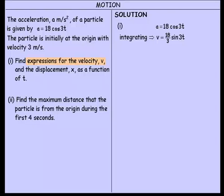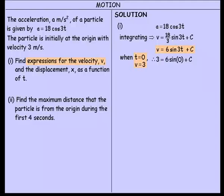It's very important to add the constant of integration and then find it using the given conditions. Initially the velocity was 3, meaning when t equals 0, v equals 3. Substituting into the equation: 3 equals 6 multiplied by sine of 0 plus c. Since 6 sine 0 is zero, we get c equals 3. Substituting back, the velocity equation is v equals 6 sine 3t plus 3.